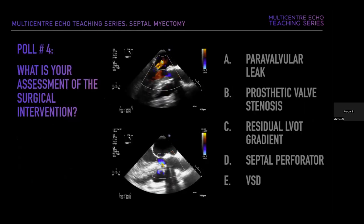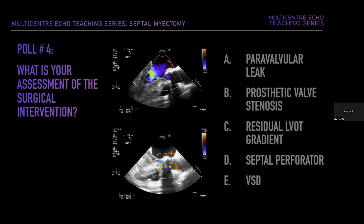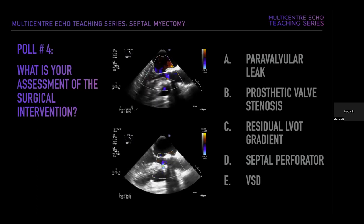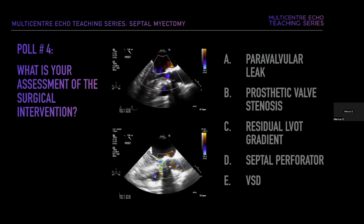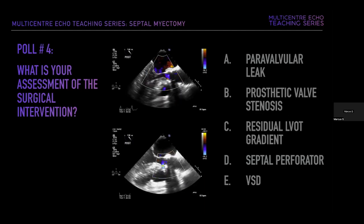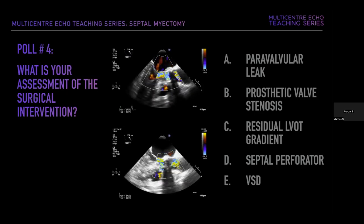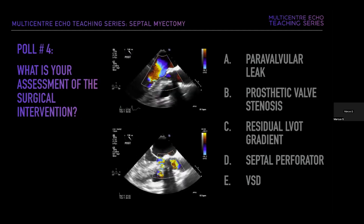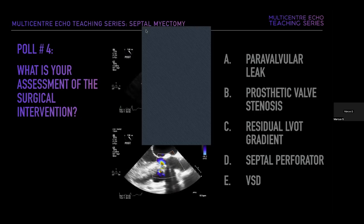Poll: what is your assessment of the surgical intervention? Options include paravalvular leak, prosthetic valve stenosis or stuck leaflet, residual LVOT gradient, septal perforator, or iatrogenic VSD. 81% of respondents correctly identified this as a VSD. Color interrogation in the midesophageal four-chamber view clearly shows a restrictive VSD in the perimembranous region at the site of the myectomy, measuring 0.6 centimeters. A freeze frame confirms the size and continuous wave Doppler demonstrates peak velocities over 4 meters per second.